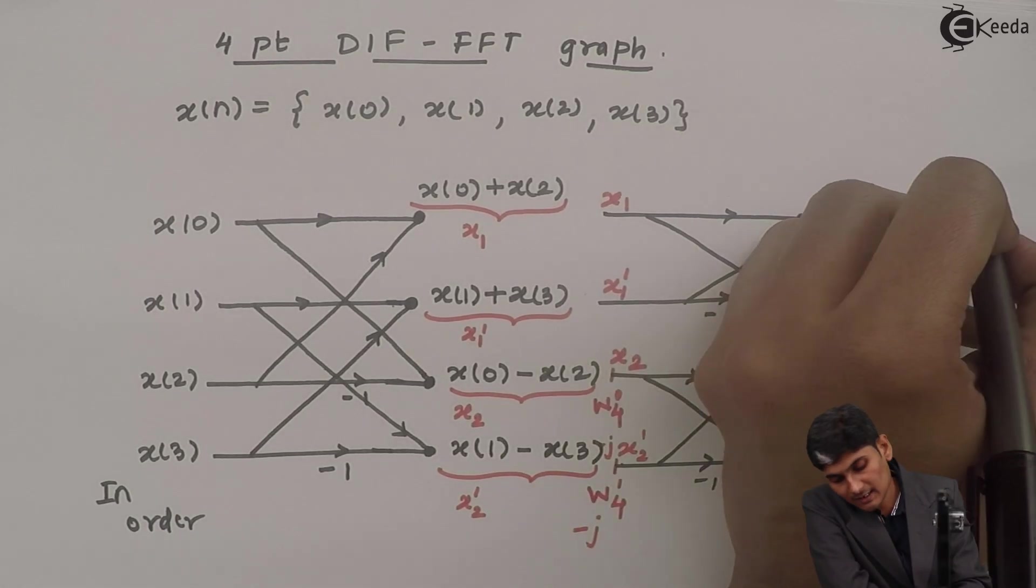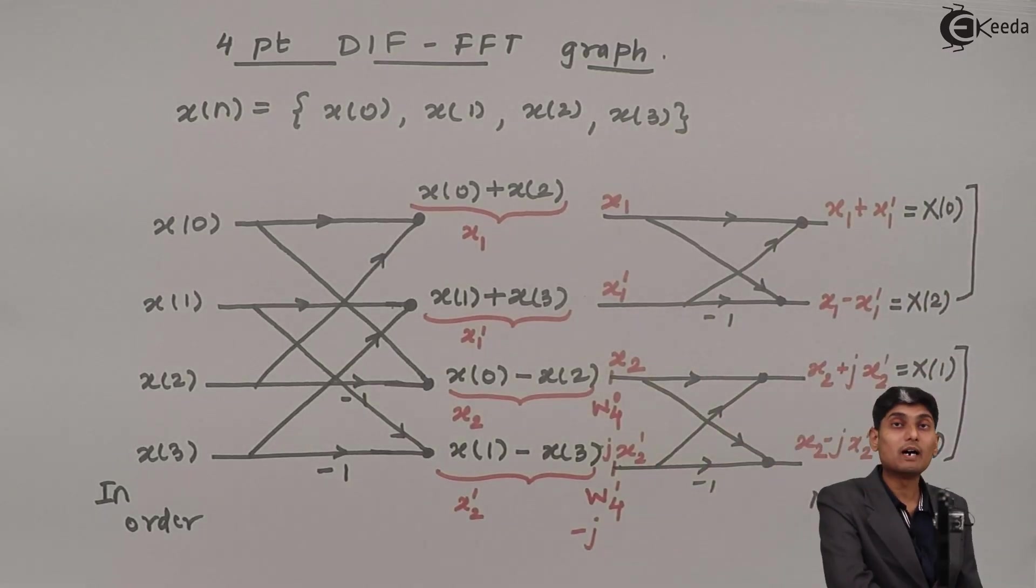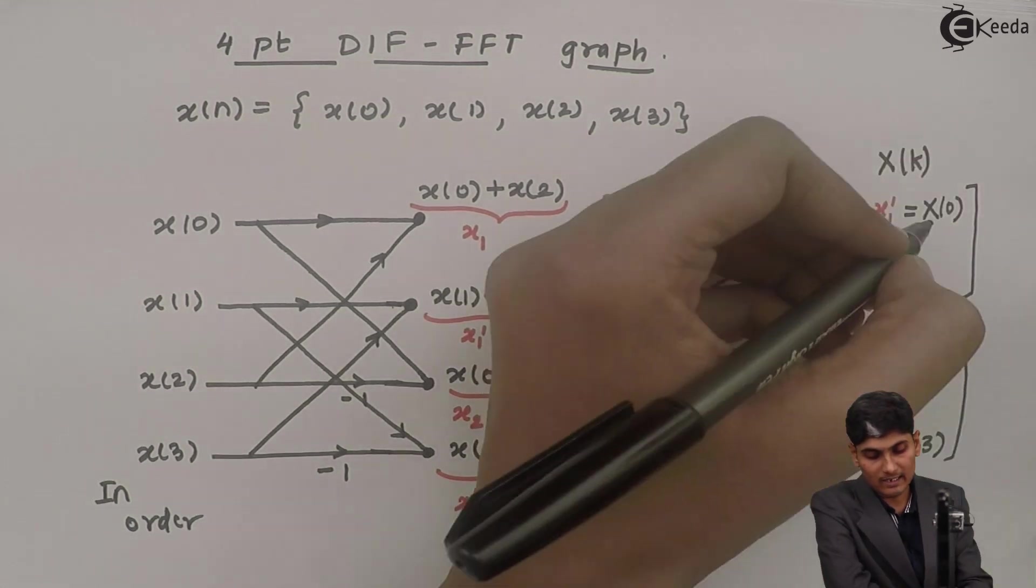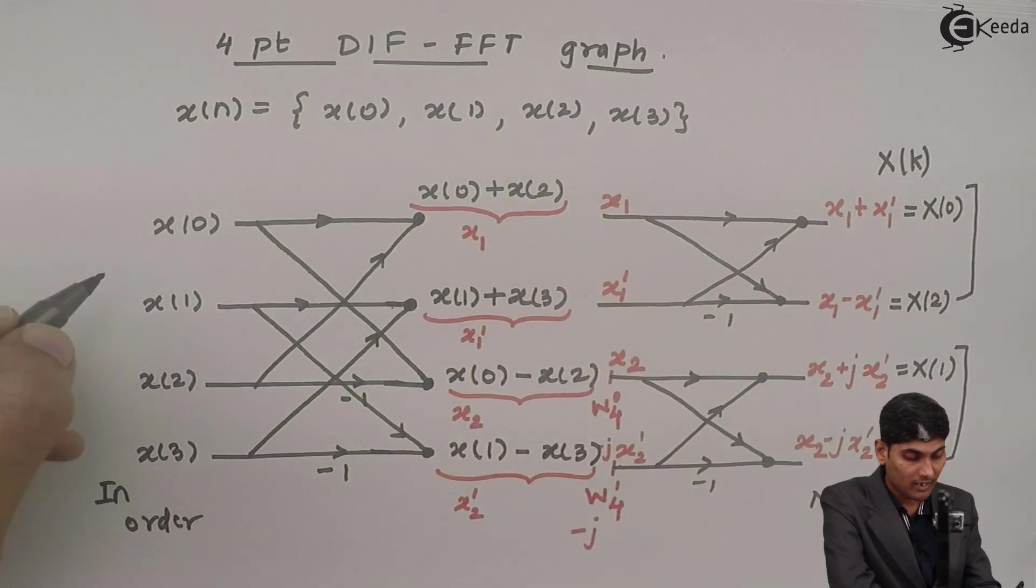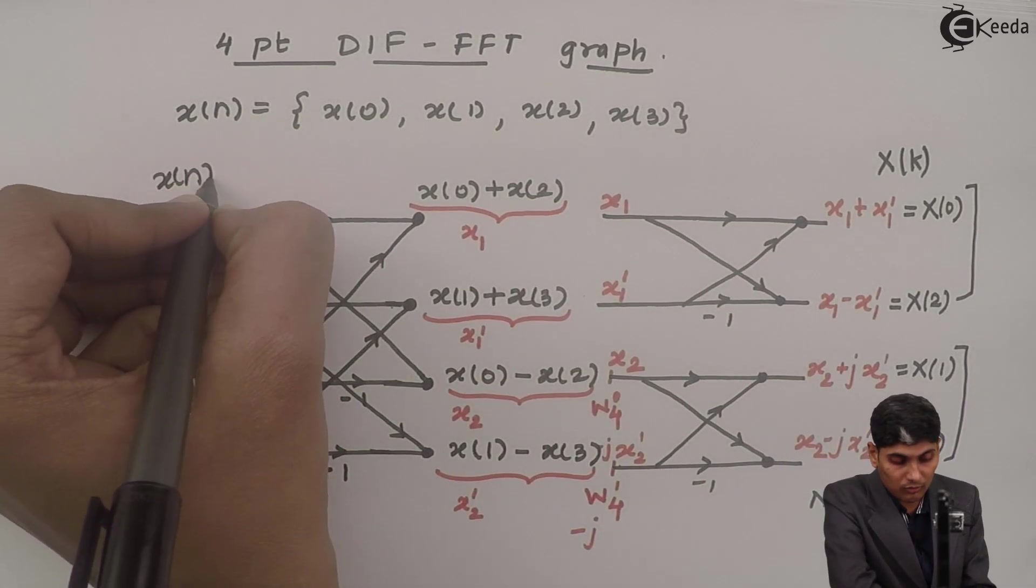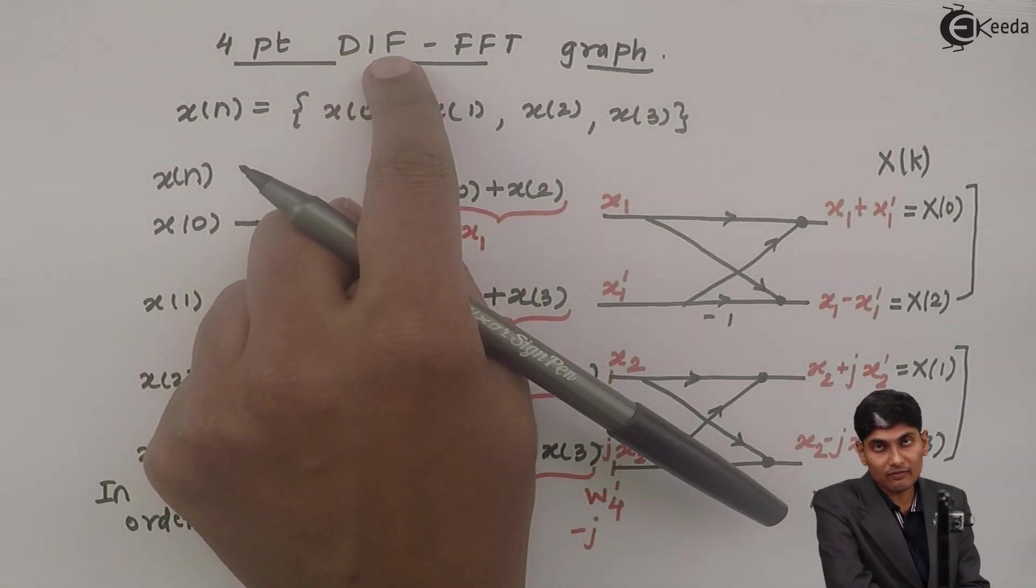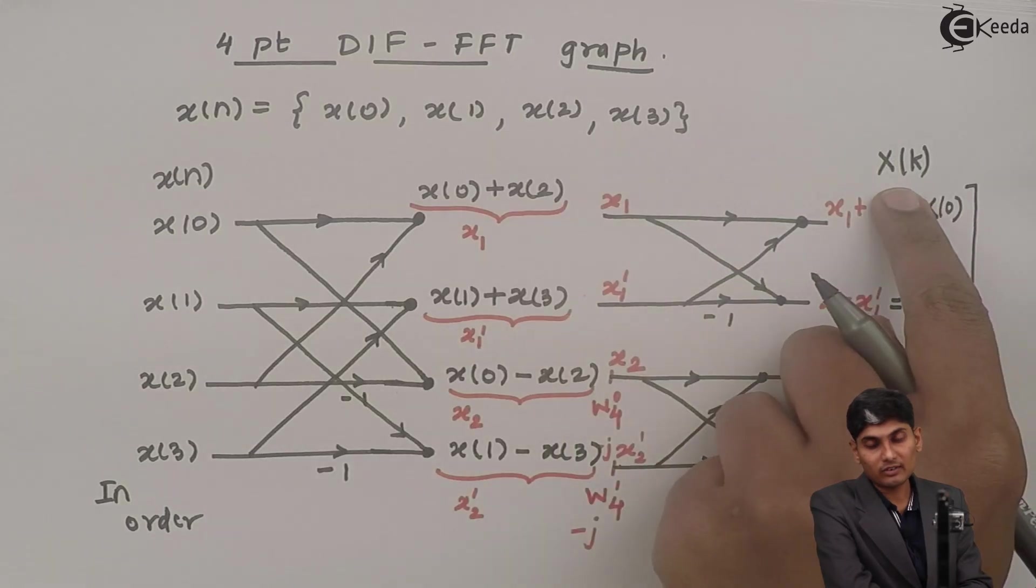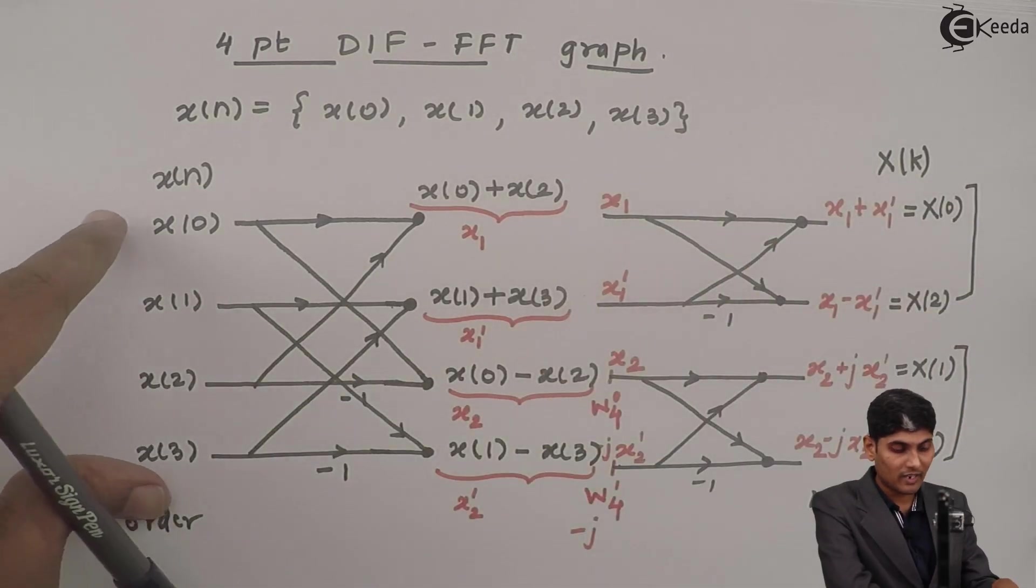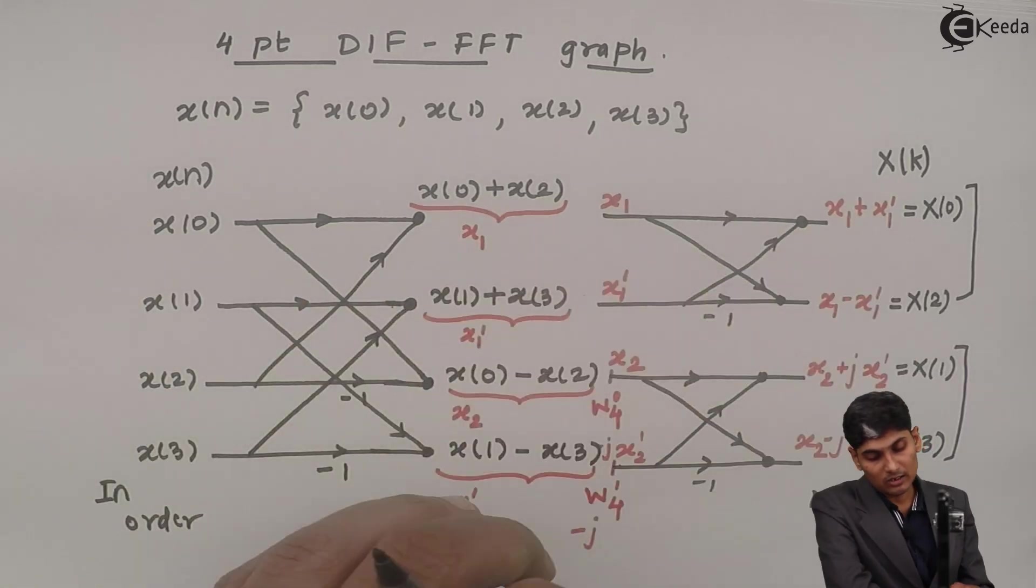That means it has now actually divided into even and odd subparts. So my x of k is divided as even subparts and odd subparts. Whereas my x of n is written in a normal flow. That is x of 0 to x of 3. So in DIF FFT, x of k is divided into even and odd parts. Whereas x of n is placed in order. And this is how the graph looks like.